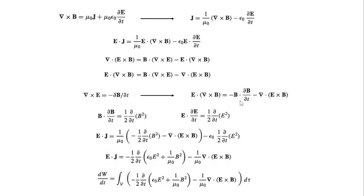Now look at the term B dot partial B by partial T. I can write it as one half partial by partial T of B squared, because the derivative of B squared is 2B times partial B by partial T. Since B and partial B by partial T are parallel vectors, the normal product is the same as the dot product. So this term is exactly equivalent. Similarly, the term E dot partial E by partial T can be written as one half partial by partial T of E squared.